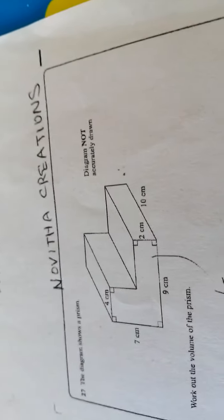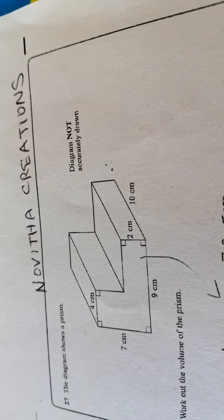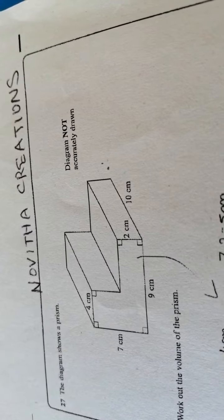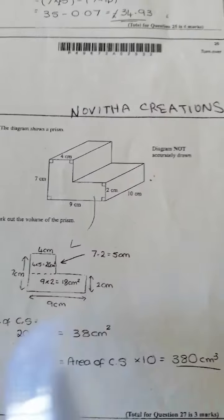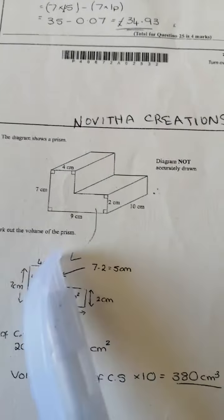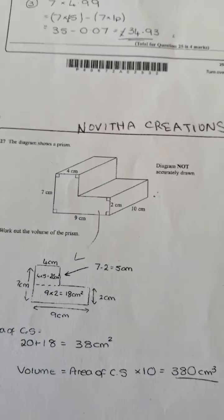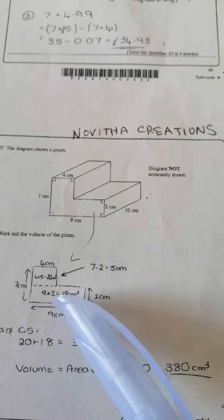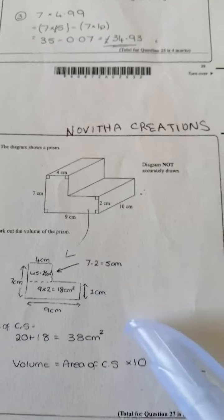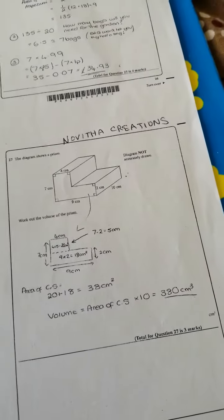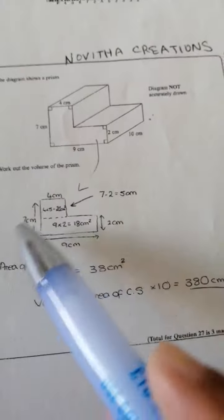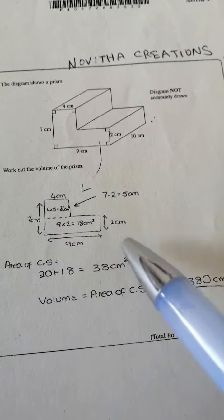So how did I solve this question? I draw a line here. So 4 times 5 equals 20, and 9 times 2 equals 18 centimeter square. How did I get 5 centimeter here? Because this is 2 centimeter.